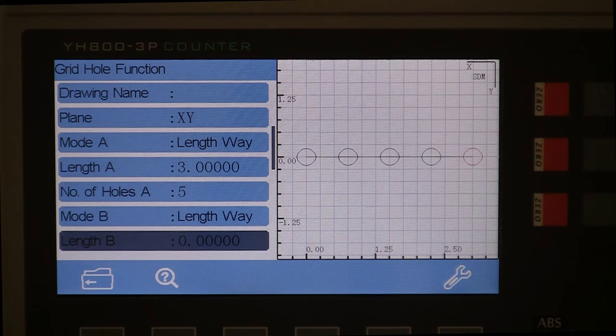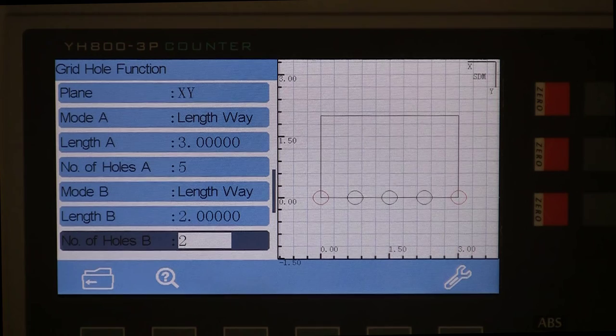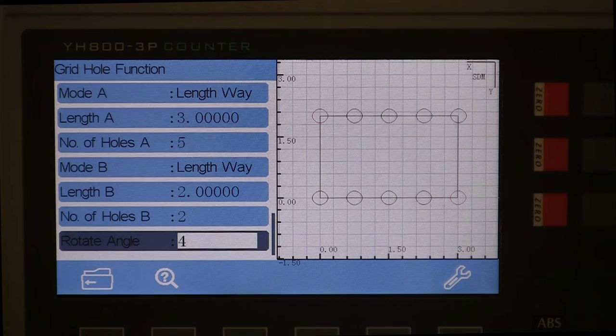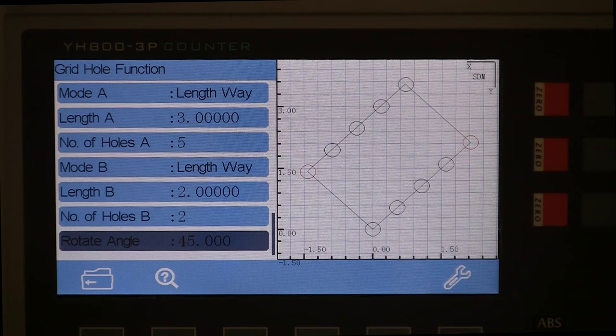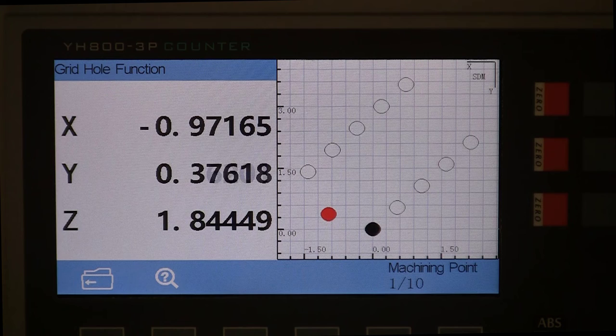And then you select the next hole, bring the drill or the axis to it. And it also tells you which point you are at. And then when you select the next one, it will show machining point 3 out of 10 or whatever it is.